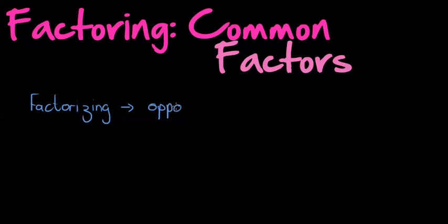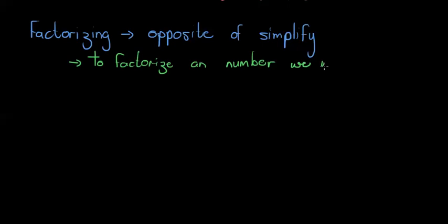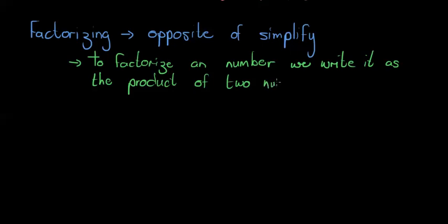In simplifying, we want to multiply things together and get rid of brackets, and factorizing is the opposite of that. A better definition: to factorize a number, we write it as the product of two numbers. For example, if I factorize the number 8, it can be 2 times 4.